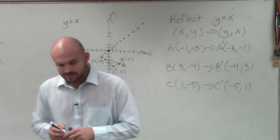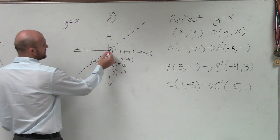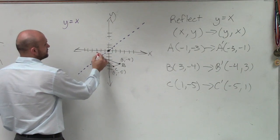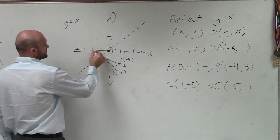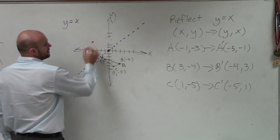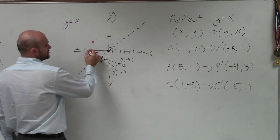All right? So now, let's just go and plot our new points. So my a prime is negative 3, 1, 2, 3, negative 1. My b prime is negative 4, 1, 2, 3, 4, 3, 1, 2, 3. And my c prime is negative 5, 1, 2, 3, 4, 5, 1.